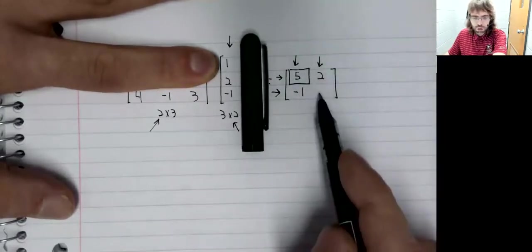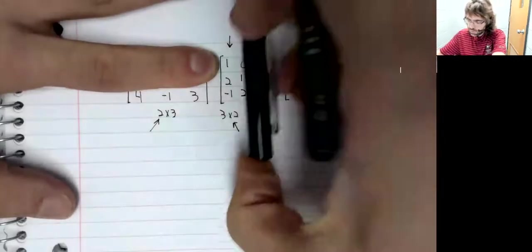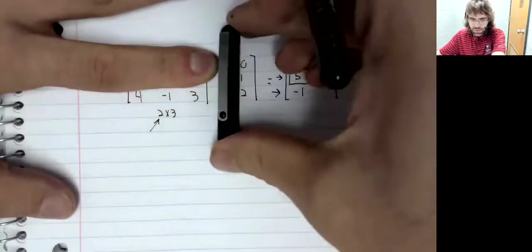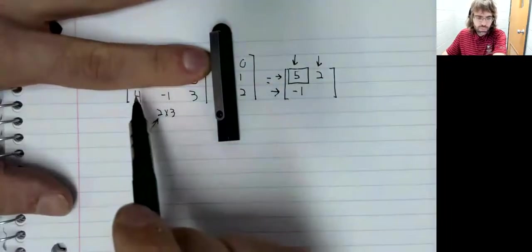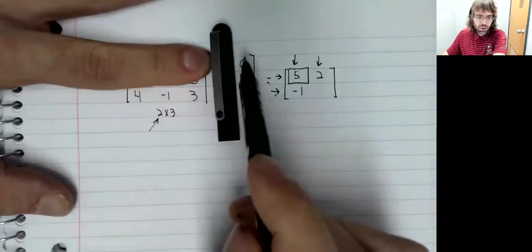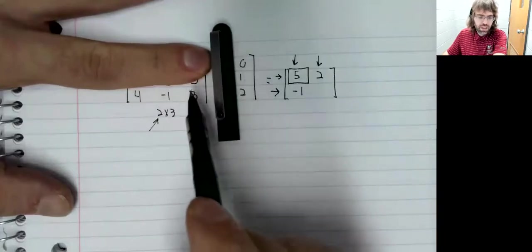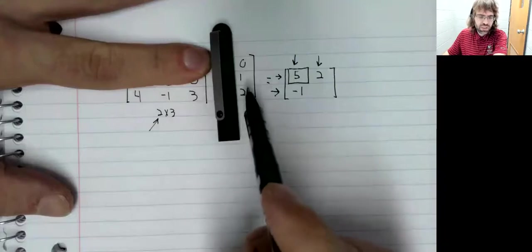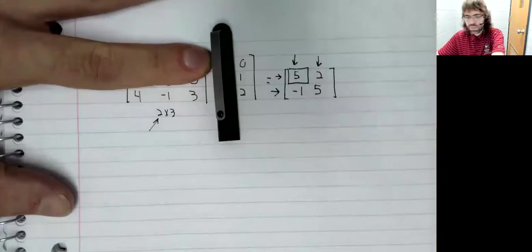Second row, second column. Well, second row, second column. Zero. Negative one. Positive six. Five.